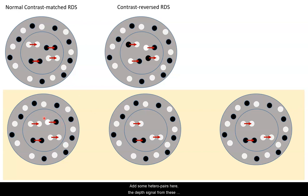Add some hetero pairs here. The depth signal from these hetero pairs is reversed from the depth signal from these homo pairs. So this is an incongruent random dot stereogram.